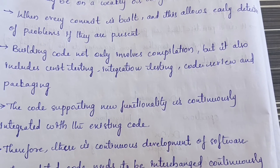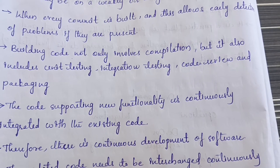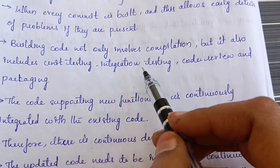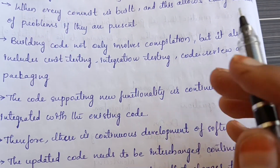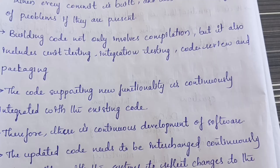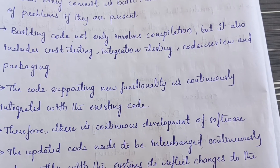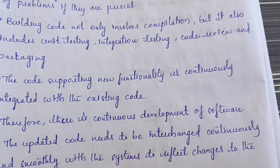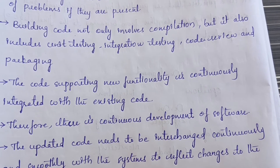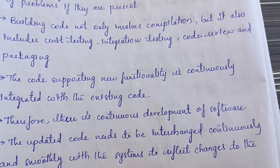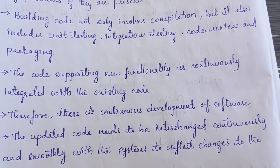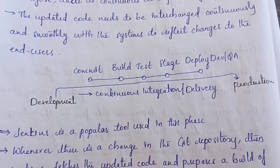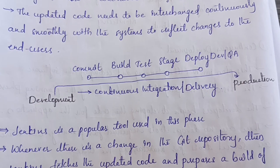Building code not only involves compilation but also includes unit testing, integration testing, and code review, as well as packaging the code. Supporting new functionality is continuously integrated with the existing code — meaning after testing, if any errors occur, the code is integrated with the already-existing code, resulting in continuous development of the software.